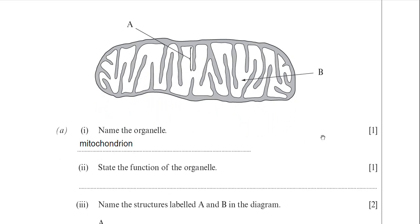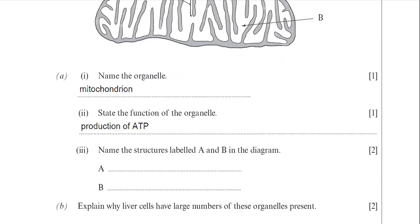Next, state the function of the organelle. Be careful here — make sure you state that it's either the production or manufacture of ATP, or that it's for aerobic respiration. Don't just put respiration down, it won't get you the mark. The mitochondria produces ATP when there's oxygen present, so that's aerobic respiration. I've put in production of ATP there.